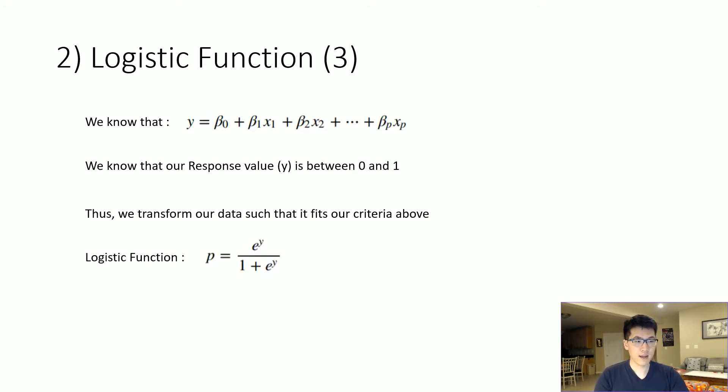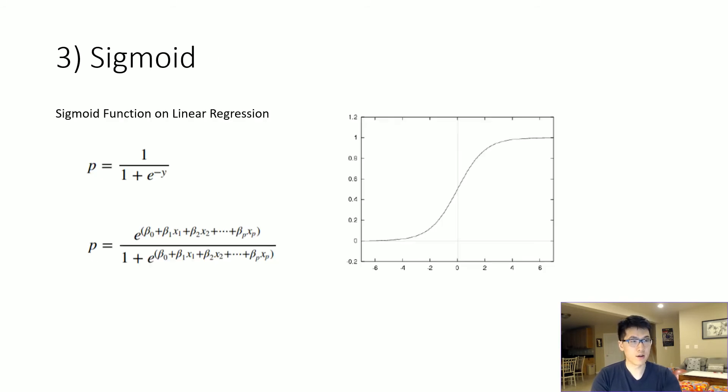This is what our logistic function looks like: we have an exponent raised to our y variable divided by one plus exponent raised to the y variable. Also note that this logistic function follows a sigmoid function, where essentially the sigmoid function is our logistic function but it will essentially normalize or scale all of our data between zero and one, as we can see right here.